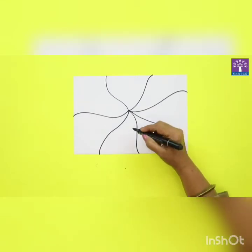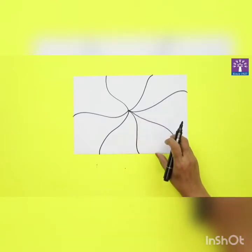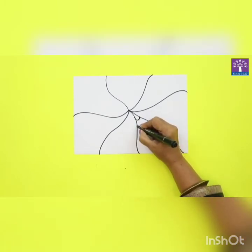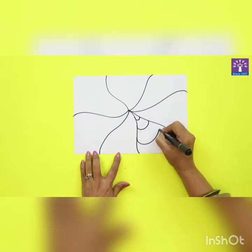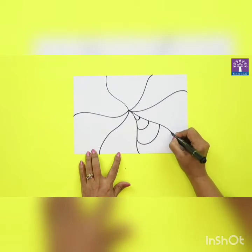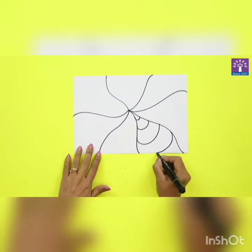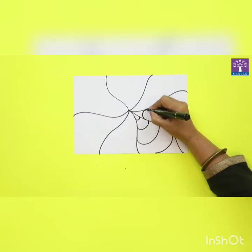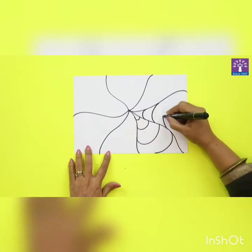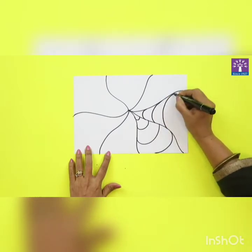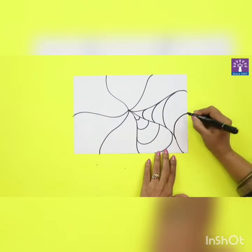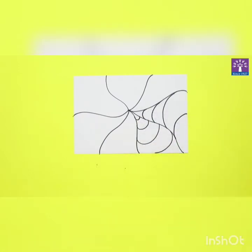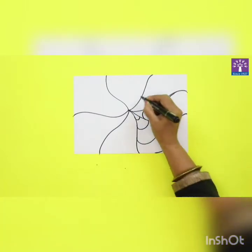We will start drawing curve lines in each part. In the first part we will draw a curve which goes upwards. Next we will draw a curve which goes downwards. In each part you can try to fit four or five curve lines. Now the next curve will be upward.